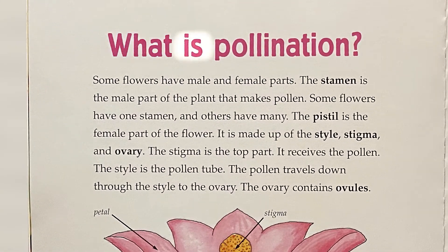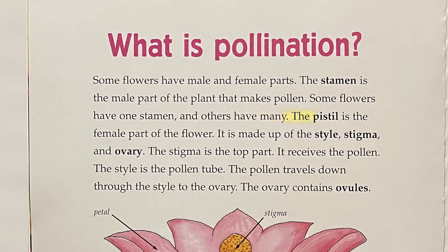What is Pollination? Some flowers have male and female parts. The stamen is the male part of the plant that makes pollen. Some flowers have one stamen, and others have many. The pistil is the female part of the flower. It is made up of the style, stigma, and ovary. The stigma is the top part — it receives the pollen.